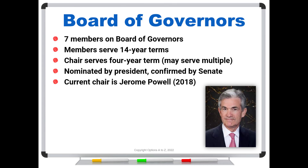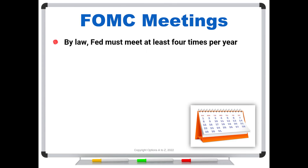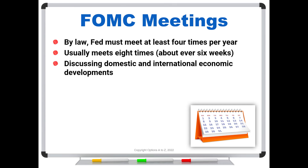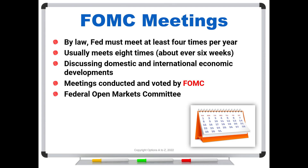So to understand that, we have to look at the FOMC meetings. By law, the Fed must meet at least four times per year, but it usually meets eight times per year, or about every six weeks. The basic idea is that they are discussing domestic and international economic developments, looking at data on inflation and employment, and trying to figure out how to financially engineer a softer landing if things are looking kind of dicey. The meetings are conducted and voted by the FOMC — the Federal Open Markets Committee. So when you hear that the Fed voted on something, it is not just the Board of Governors — it is the FOMC.